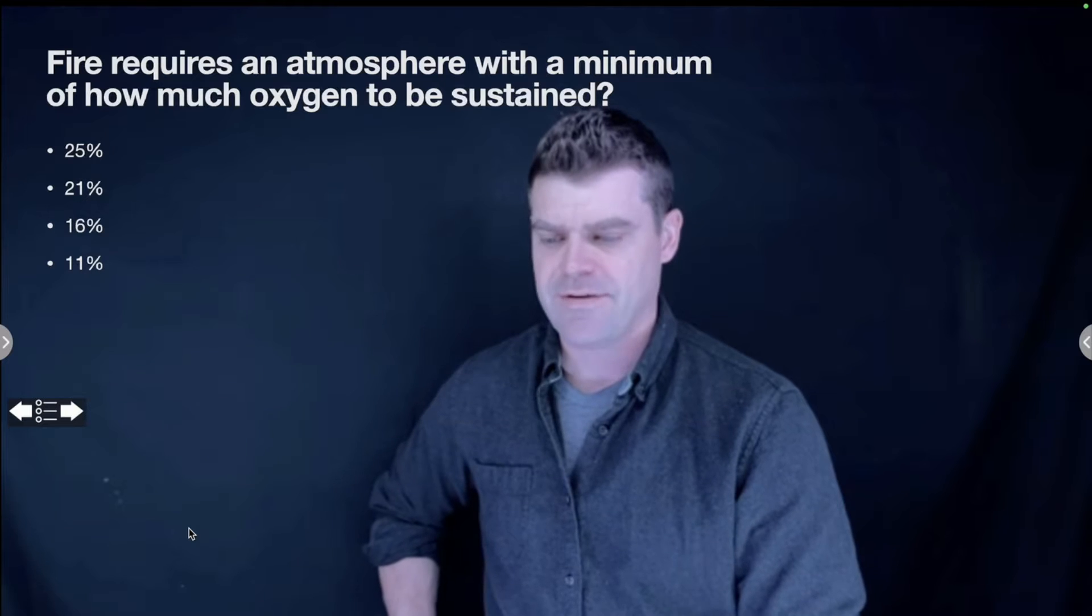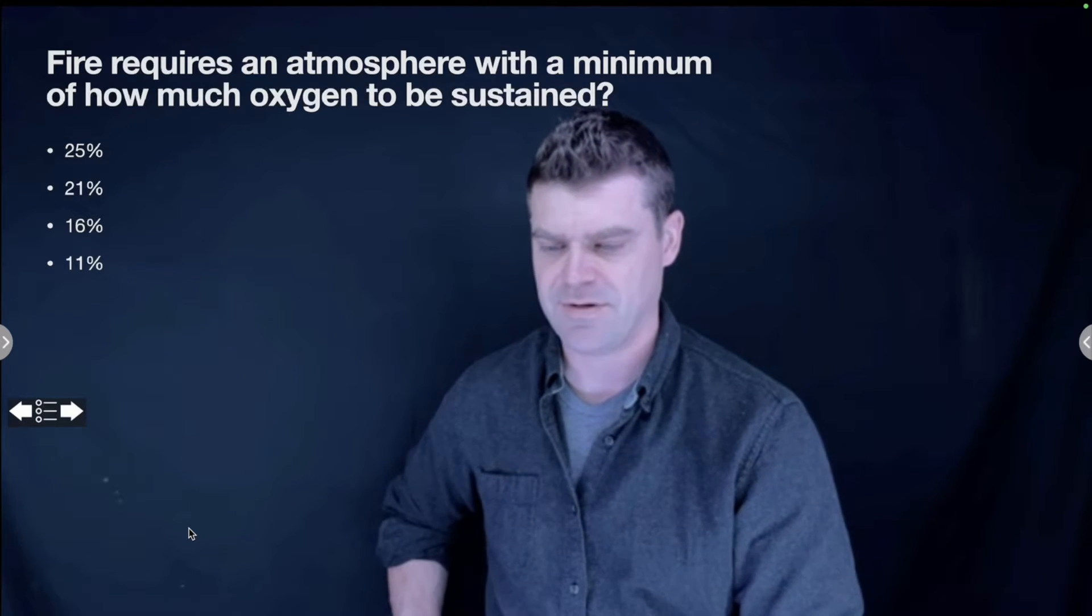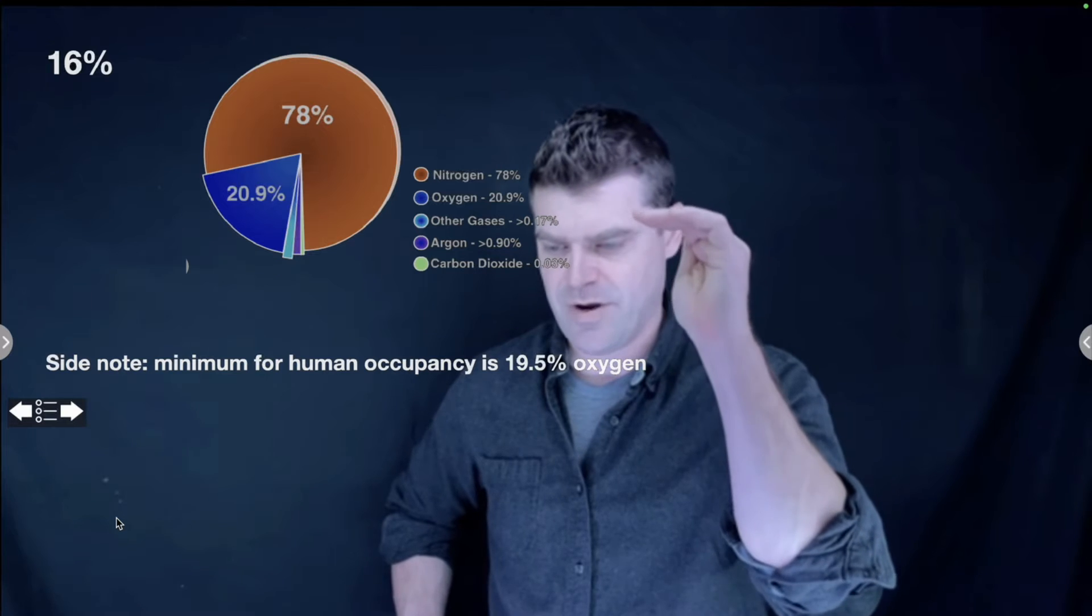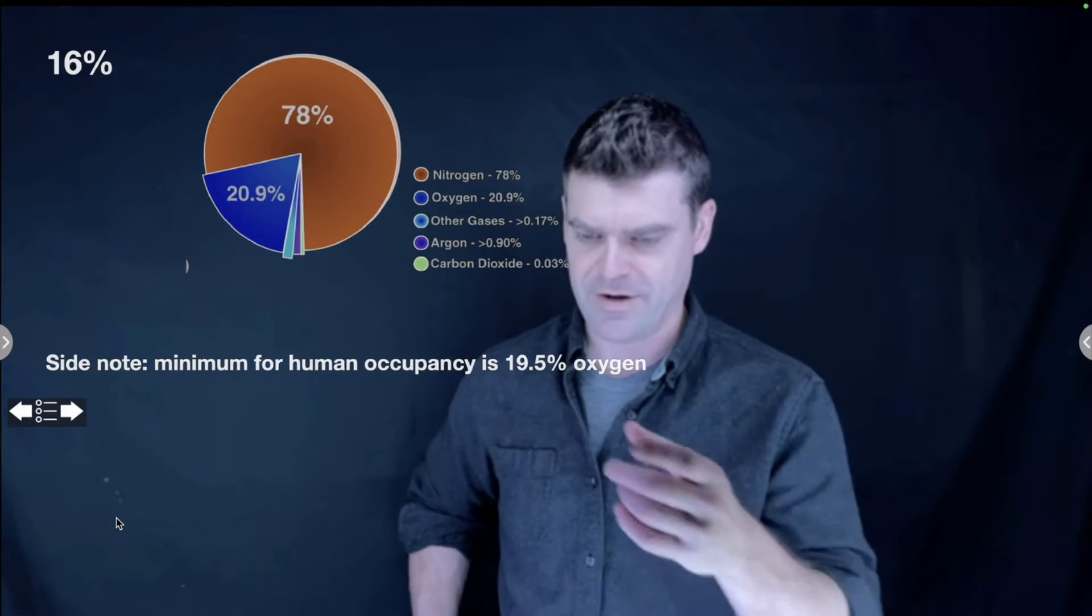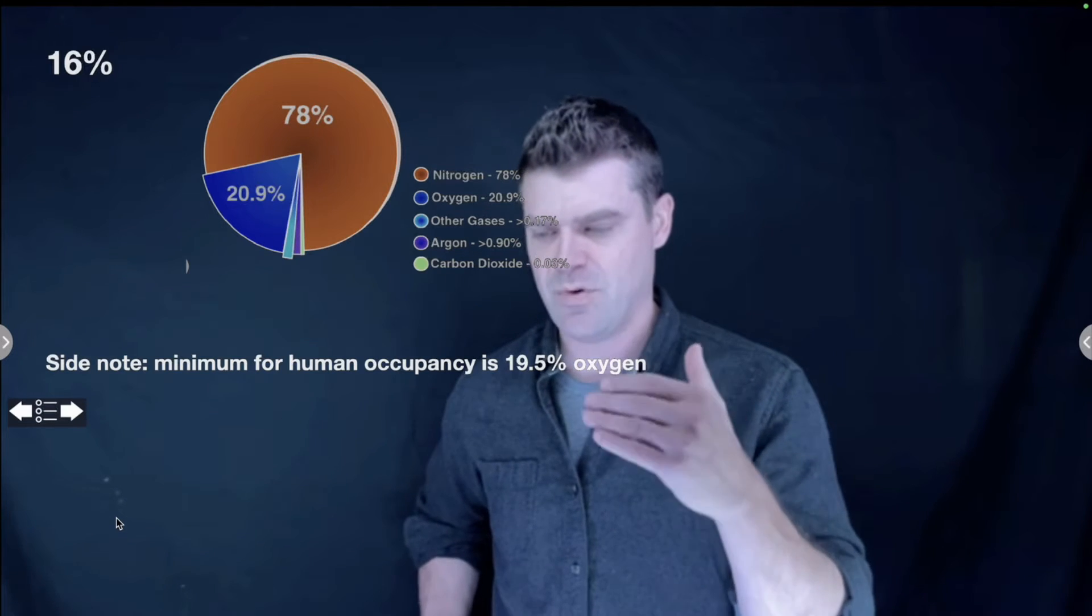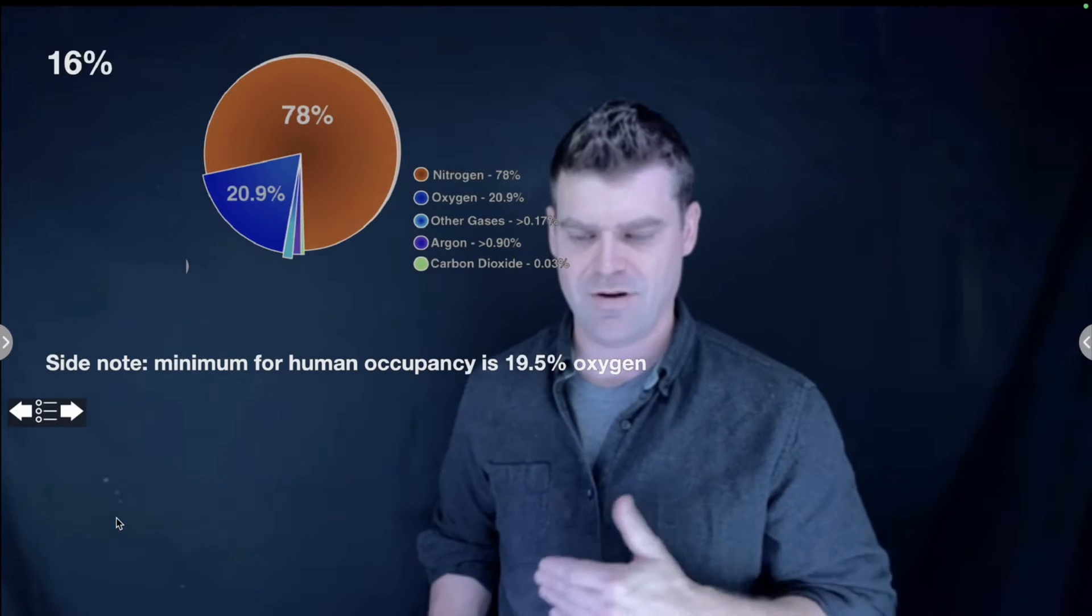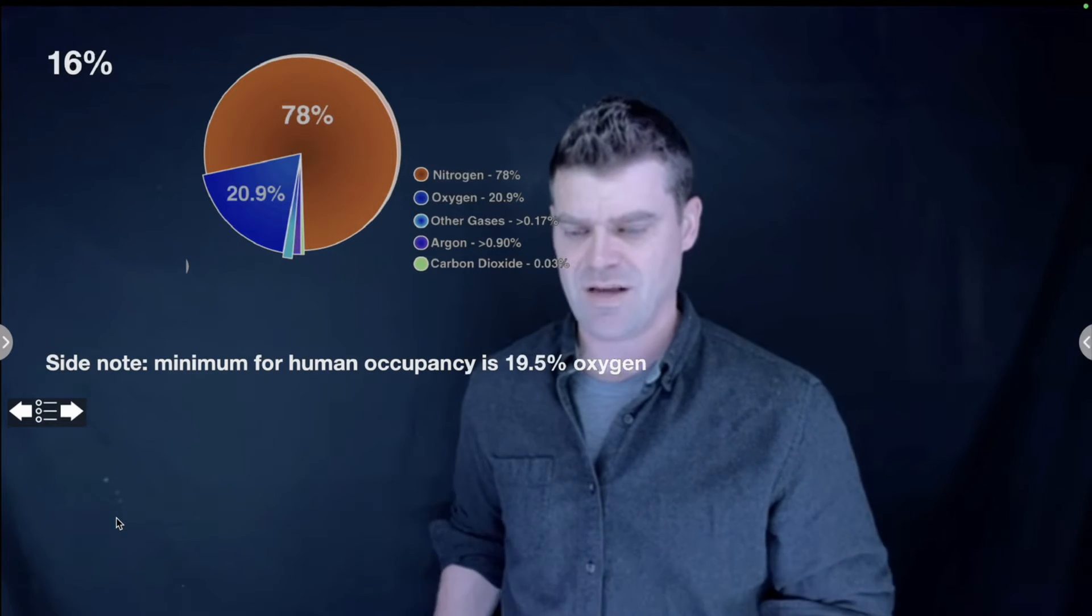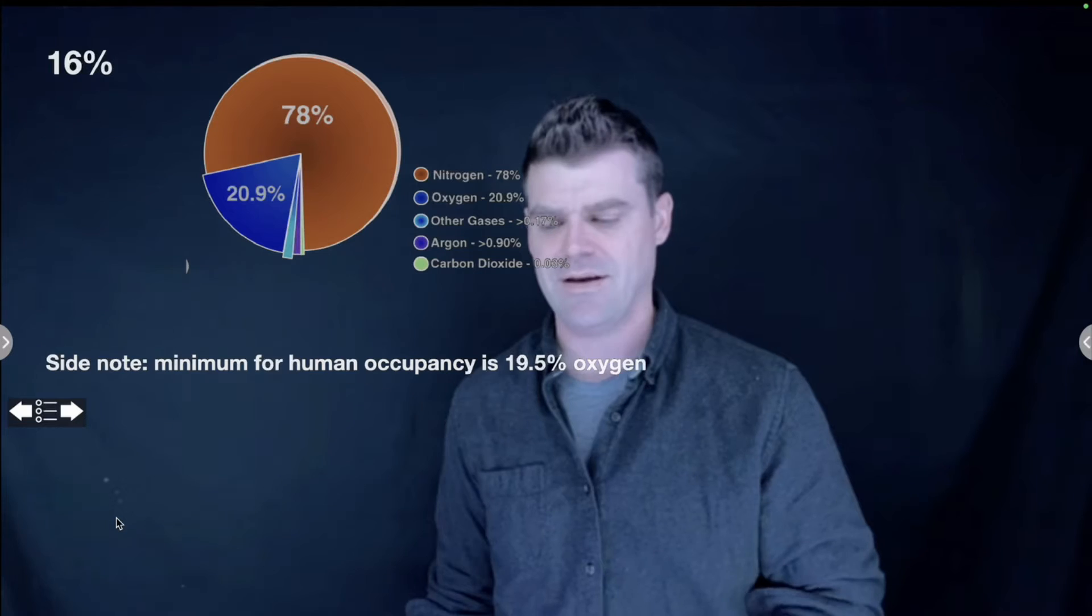Fire requires an atmosphere with a minimum of how much oxygen to be sustained? 25, 21, 16, or 11? The answer is 16%. If you drop the oxygen content from the regular 20.9% that is in the air down to 16%, that means there's not enough oxygen within your fire triangle to sustain the combustion process. On a side note, the minimum amount for human occupancy in a confined space is 19.5% oxygen. If you go below that, you start to get sleepy and you might not wake up.